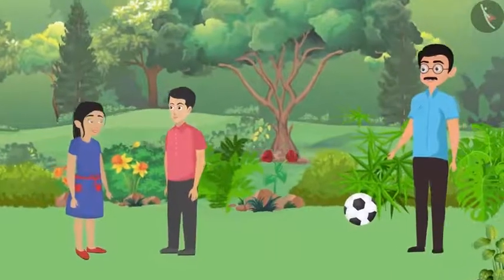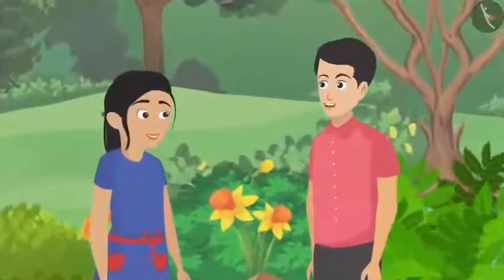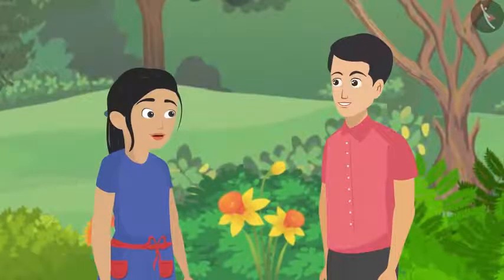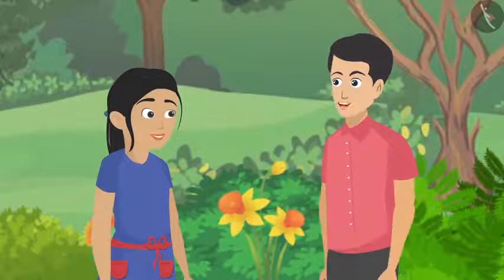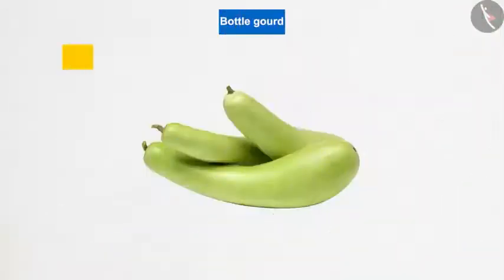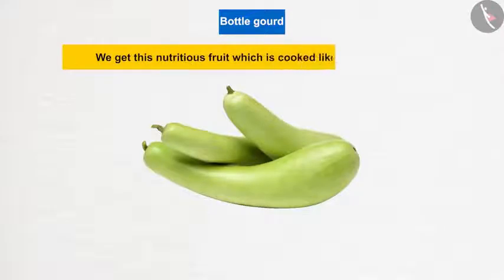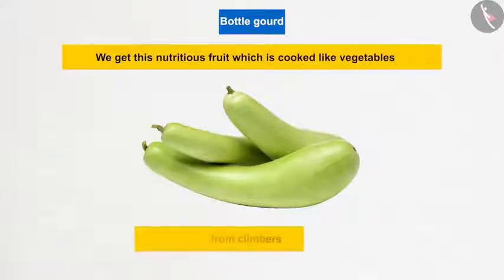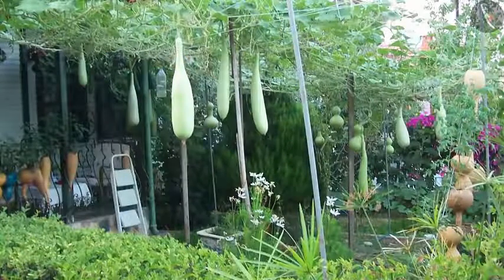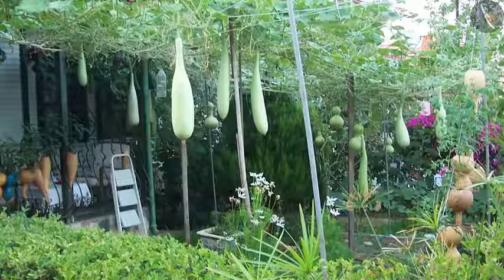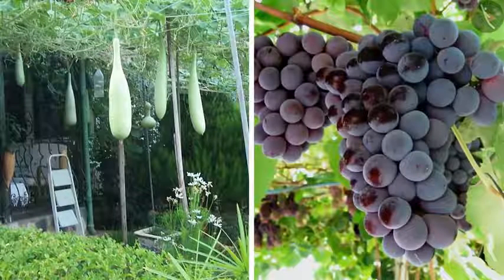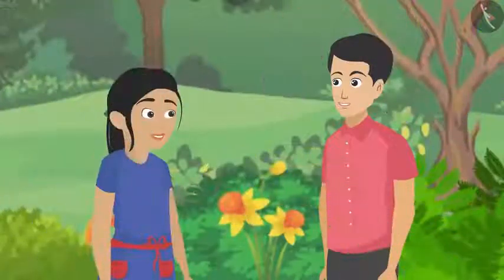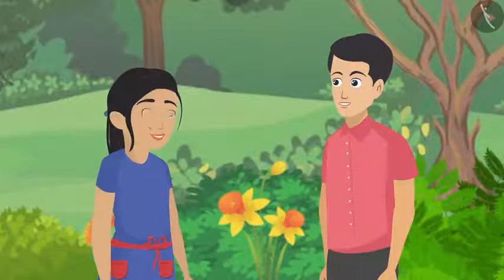The kids joke about their mouths watering hearing about watermelon and mango — but not bitter gourd! Father then explains climbers: these vines climb up trees, ladders, or other solid structures around them. We get nutritious fruits cooked like vegetables from climbers, and grapevine is also a climber.